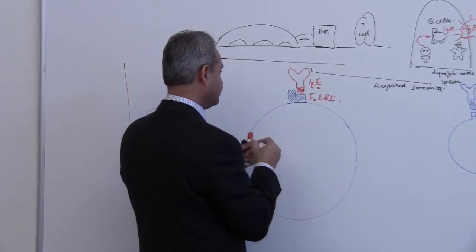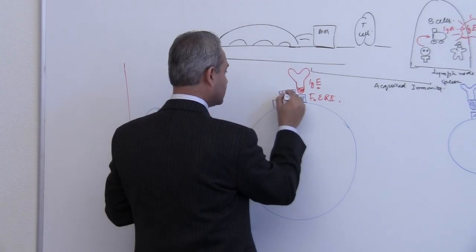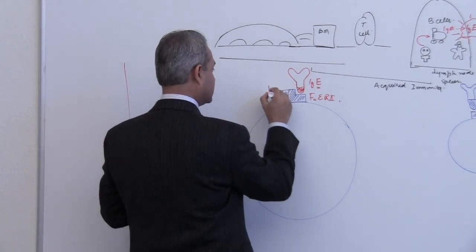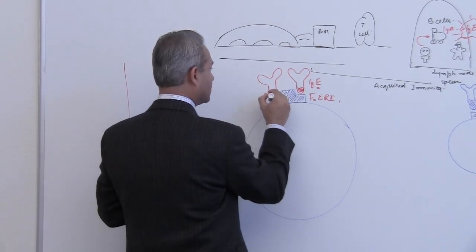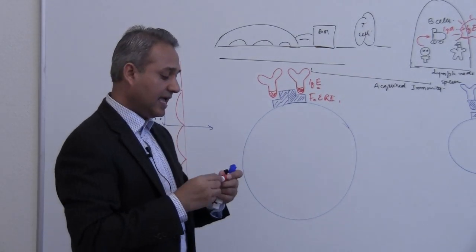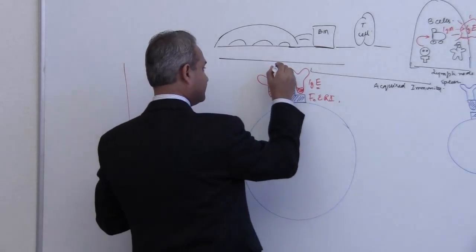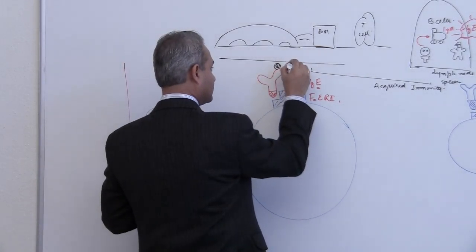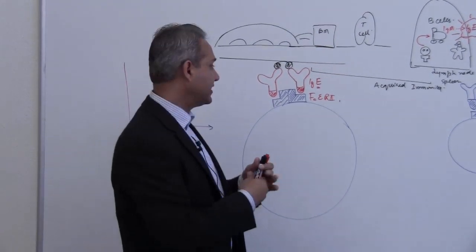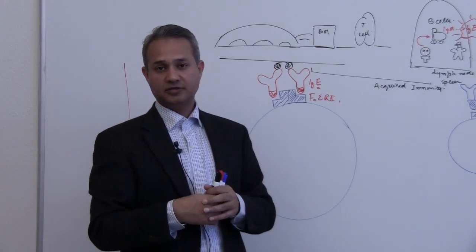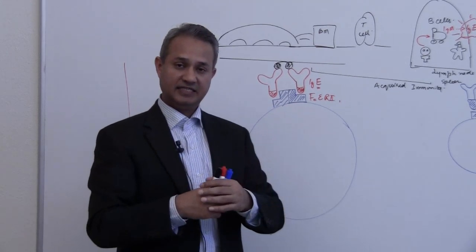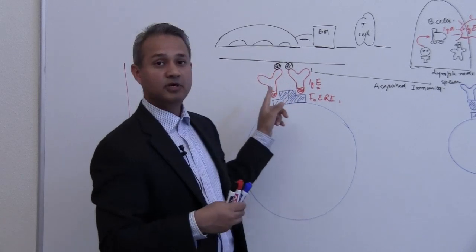When two such chairs are occupied by IgE, when two IgEs are sitting next to each other and an allergen creates a cross-link, that is important. Two witnesses are needed inside the cell before the action will take place. Two consecutive IgEs or two nearby IgEs - their receptors have to become triggered together.